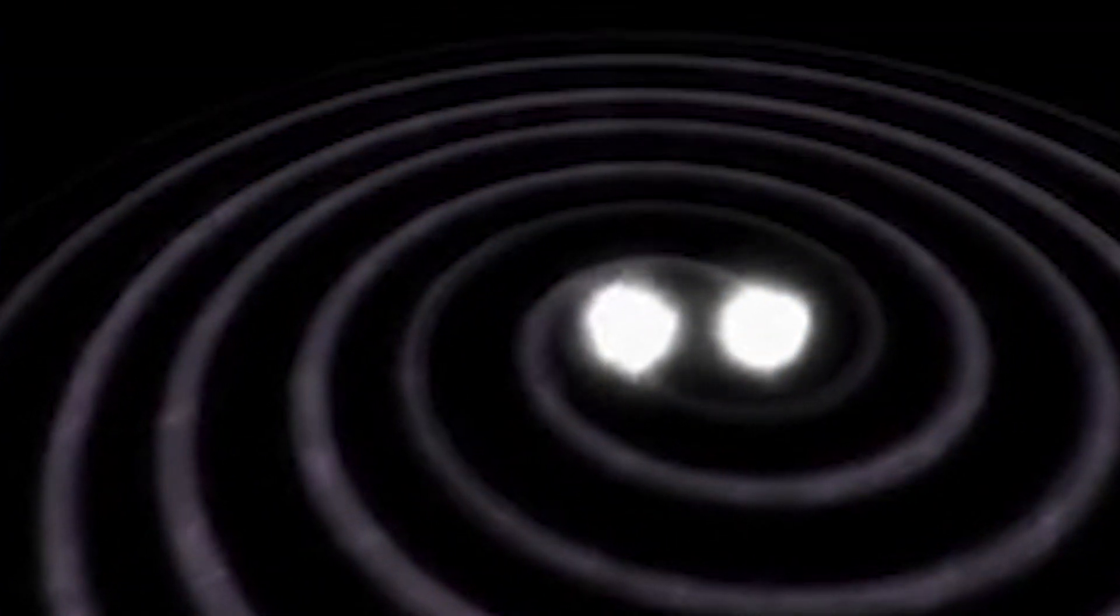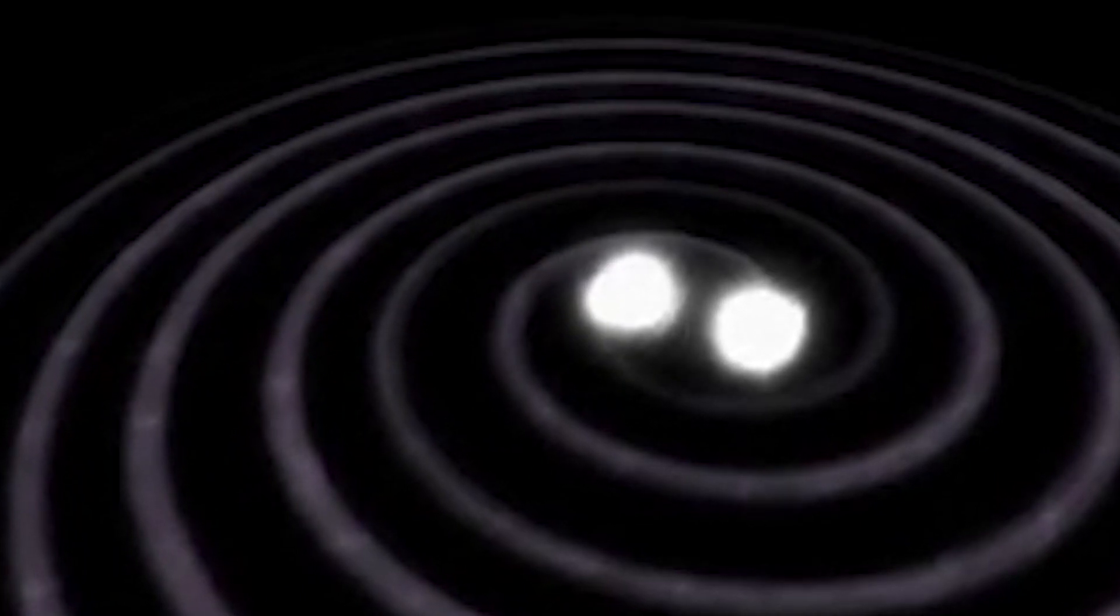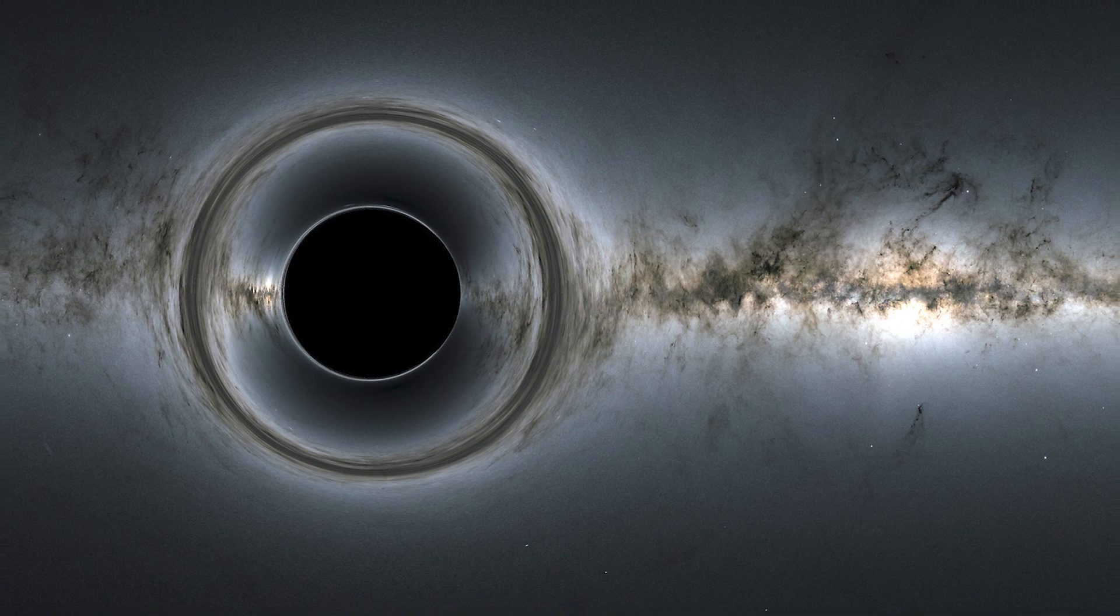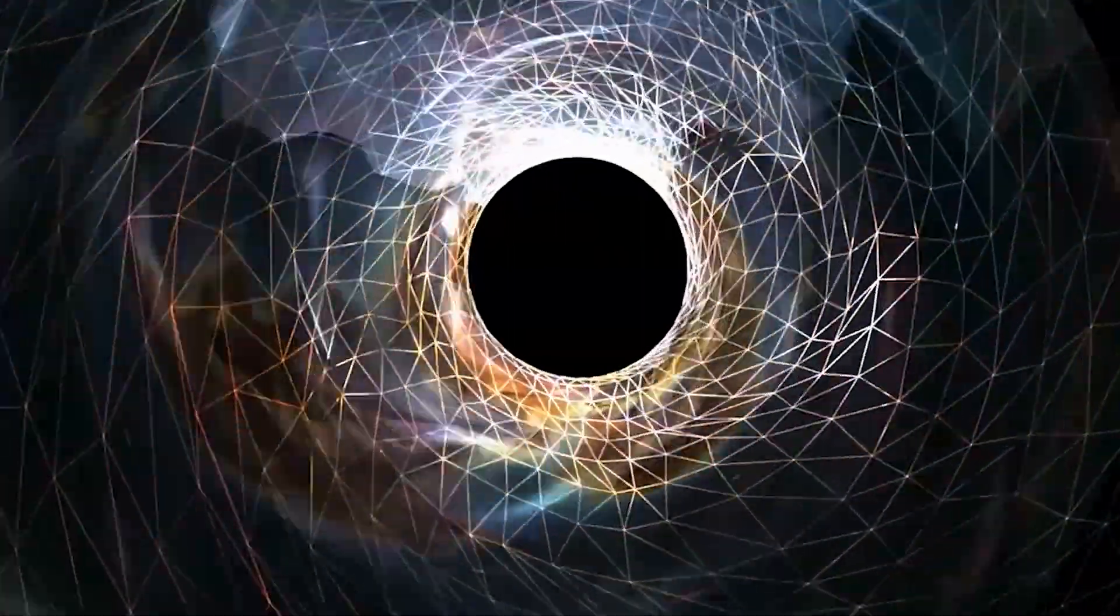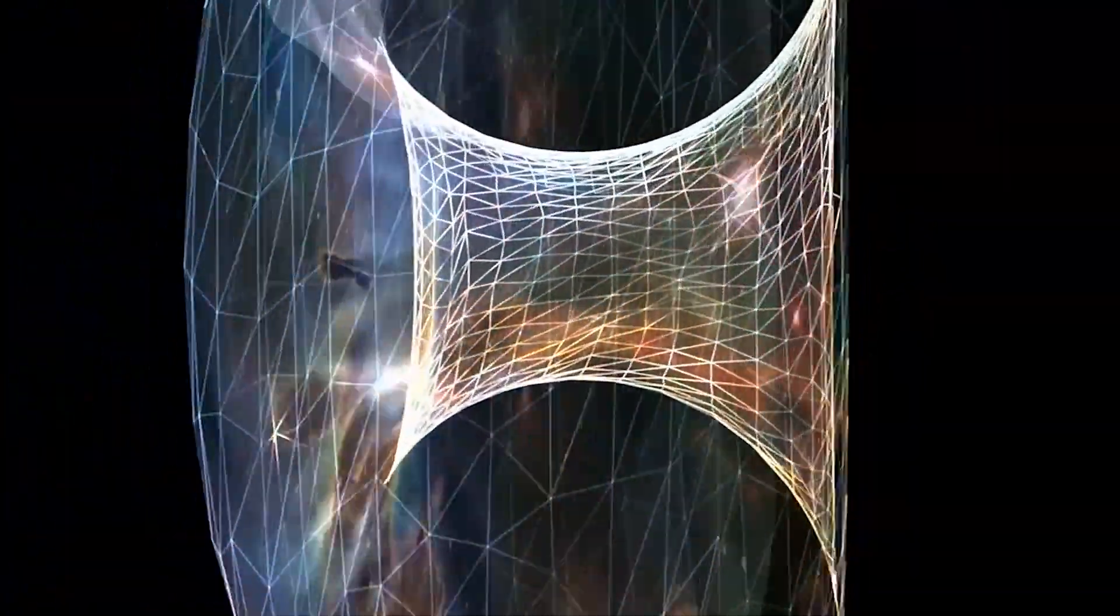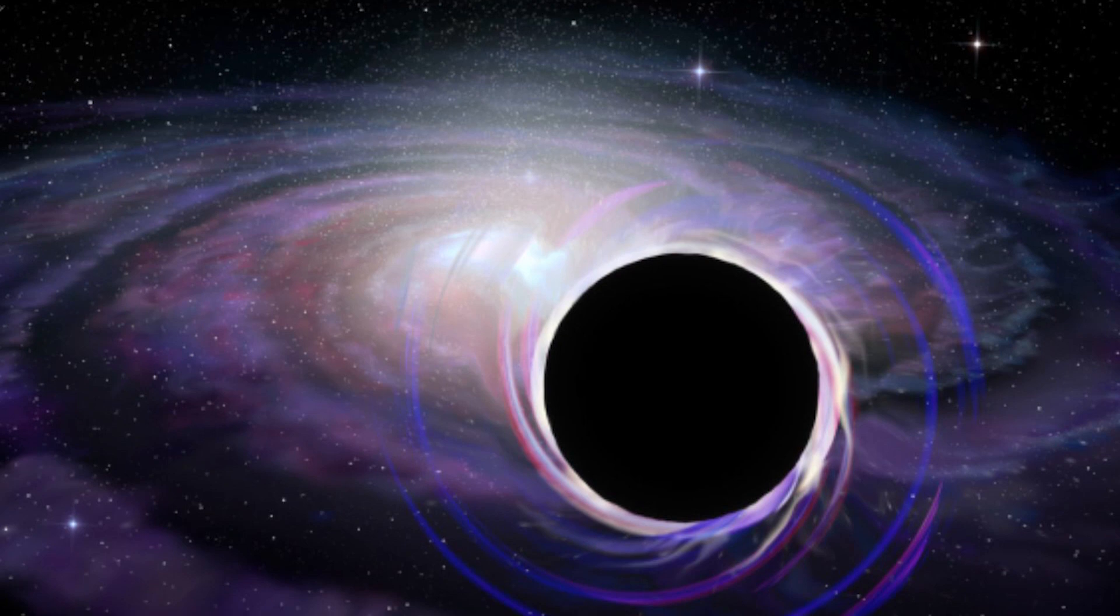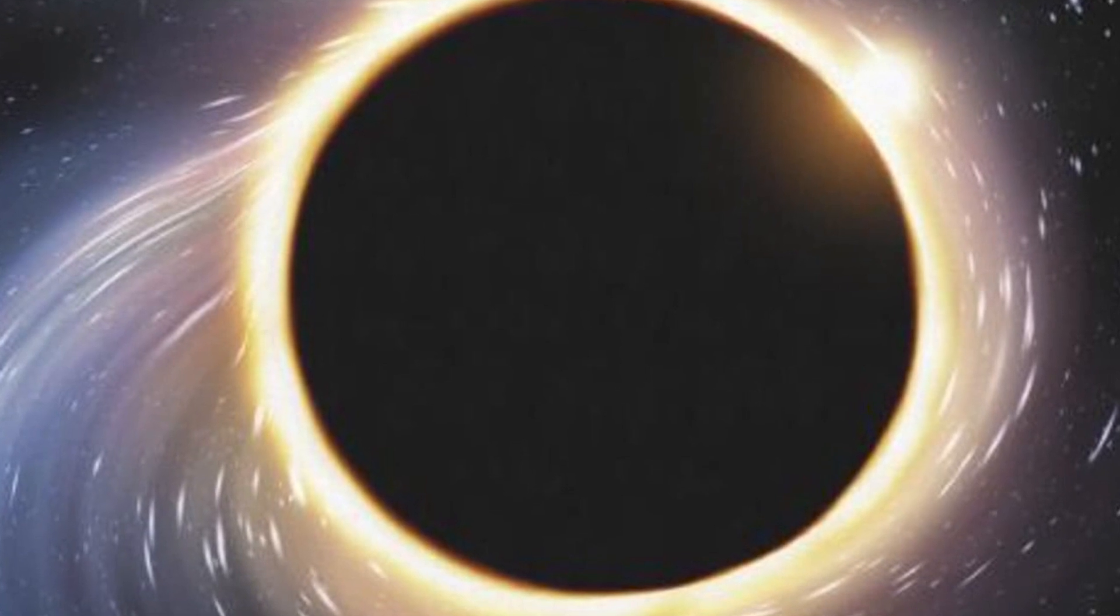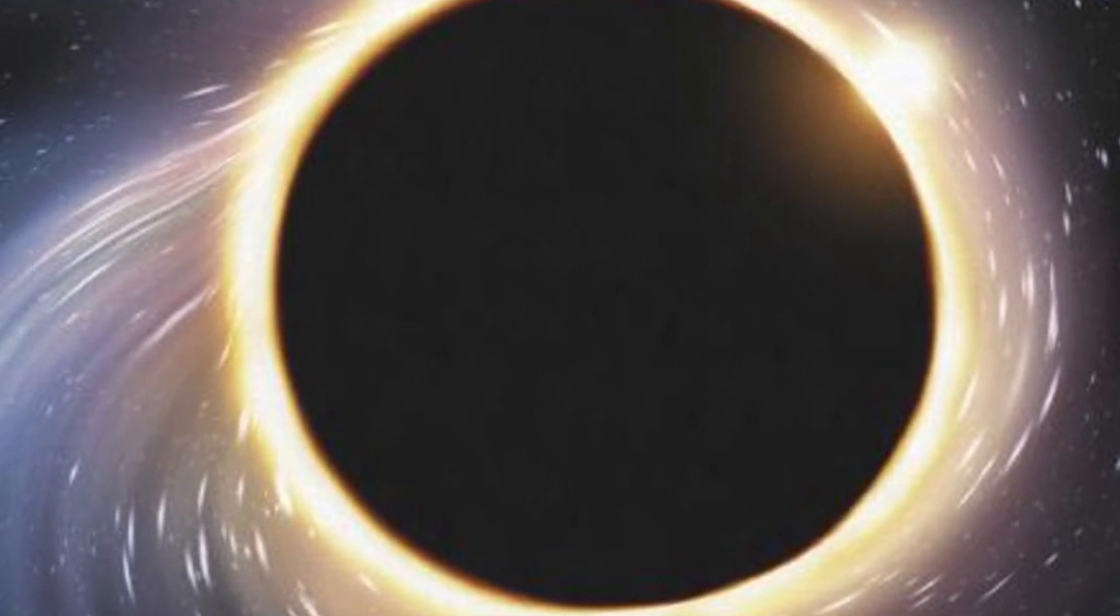A black hole can be conceptualized as having three distinct layers: the event horizon, the singularity, and the interior. A zone that surrounds a black hole's event horizon is capable of preventing light from escaping, is known as event horizon. After a particle has crossed the event horizon, it is no longer able to leave the region. On the opposite side of the event horizon, gravity continues to behave the same way.